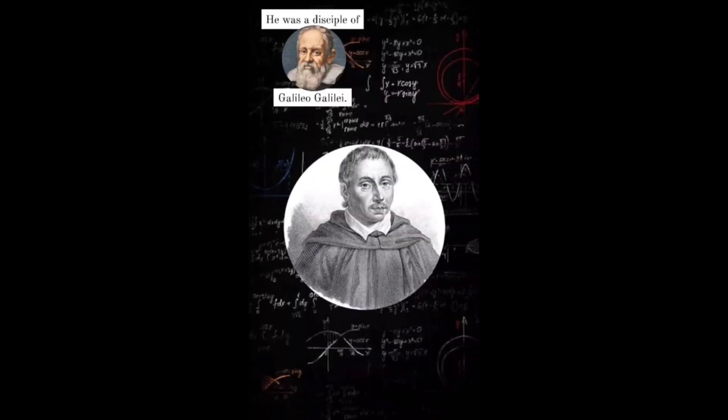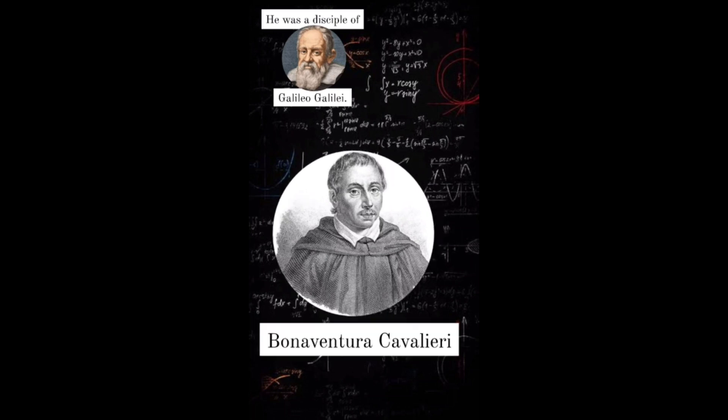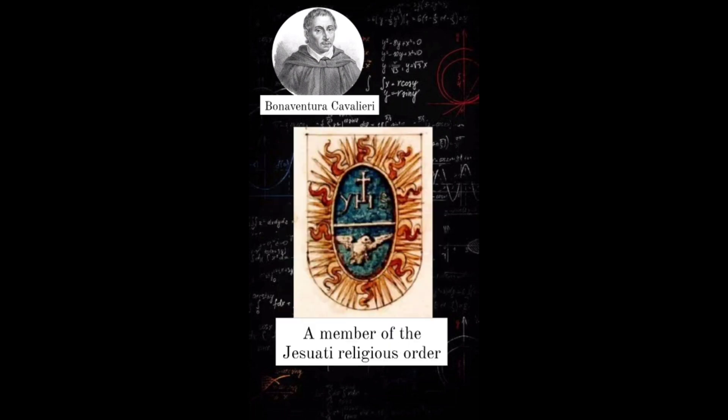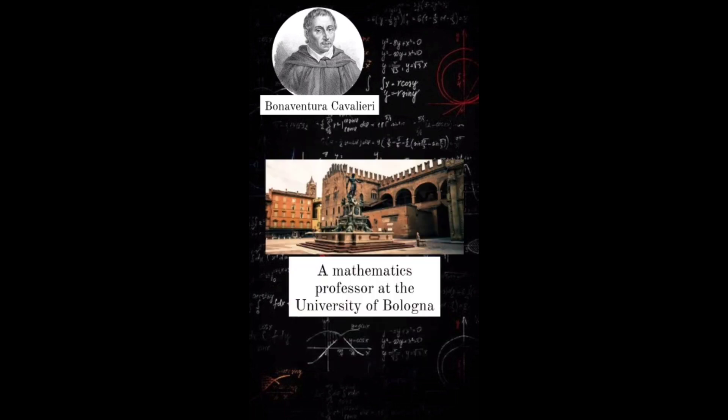Today's mathematician was a disciple of Galileo Galilei. He was Bonaventura Cavalieri. He was born in Milan, Italy in 1598. He was a member of the Jesuati religious order and a mathematics professor at the University of Bologna.